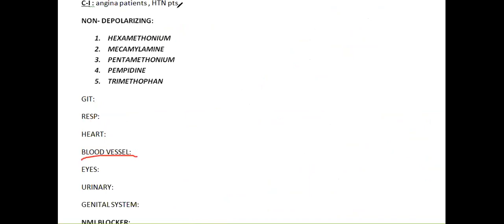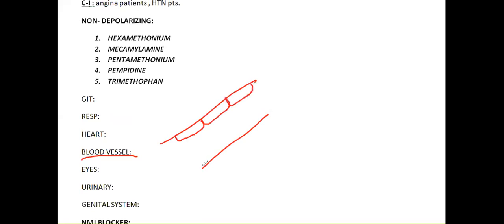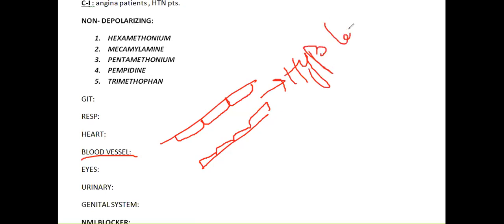Now for the blood vessel effects - we have a vasodilation effect. All these antagonists have this action on the smooth muscles of our blood vessel lining. What they do is dilate these blood vessels. So when all these drugs dilate your blood vessels, you will experience hypotension - your blood pressure will decrease.